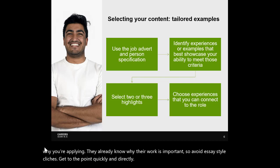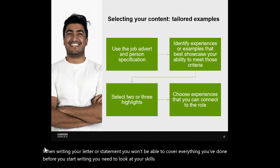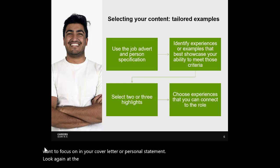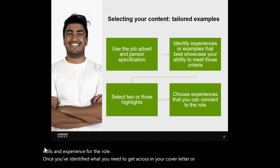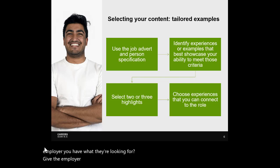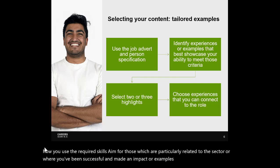When writing your letter or statement, you won't be able to cover everything you've done. Before you start writing, look at your skills and experiences and prioritise those you want to focus on. Look at the job spec or advert and use your research to prioritise the most important skills and experience for the role. Once you've identified what you need to get across, look again at your CV — where have you demonstrated those skills? Which experiences show the employer you have what they're looking for? Give the employer two or three highlights: pick your best, most relevant examples to show how you've used the required skills, particularly those related to the sector, where you've been successful and made an impact, or examples that might set you apart from others.